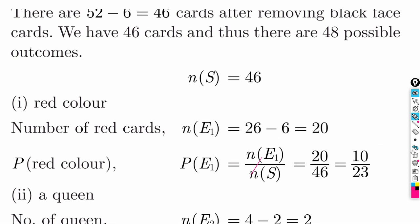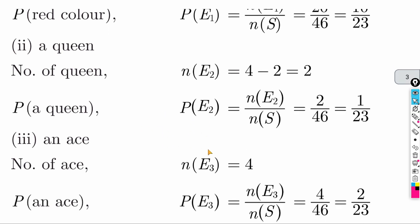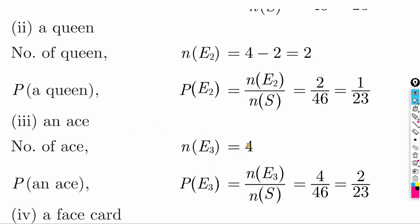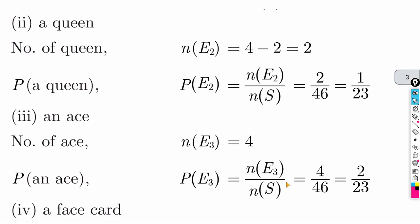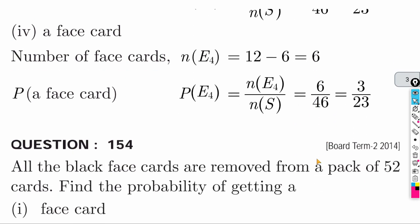Find the probability of drawing a queen card. Total queens = 4; 2 are red (removed), so 2 remain. Answer: 2 by 46. Find the probability of an ace card. All 4 aces remain. Answer: 4 by 46, which simplifies to 2 by 23.